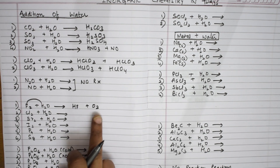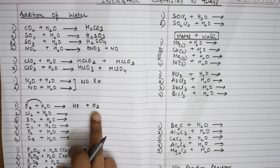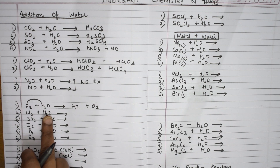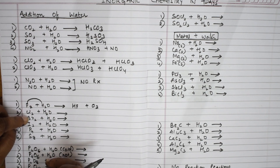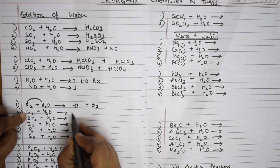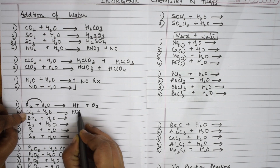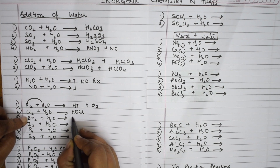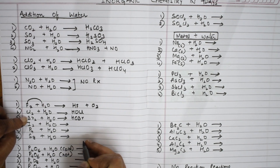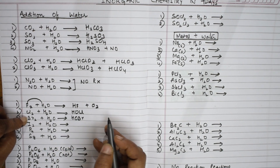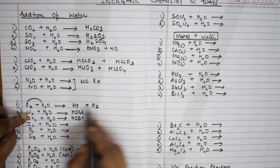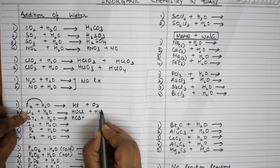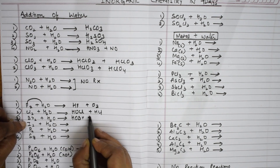When chlorine plus water reacts, you get HOCl and HCl. When bromine plus water reacts, the products are similarly HOBr and HBr. Both cases follow the same pattern.